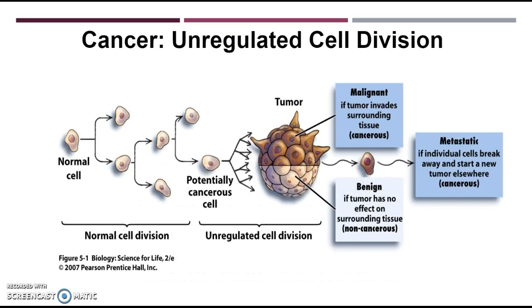So cancer, in a nutshell, is unregulated cell division — it's our own cells that are dividing too much. Let's talk about some cancer vocab. A tumor is a mass of uncontrollably dividing cells with no purpose, and it can lead to the rest of your body's organs functioning incorrectly and end up killing you slowly.